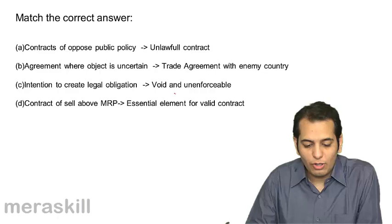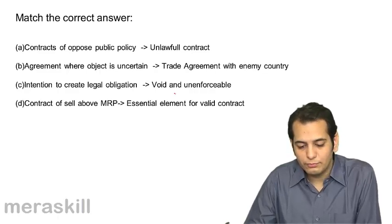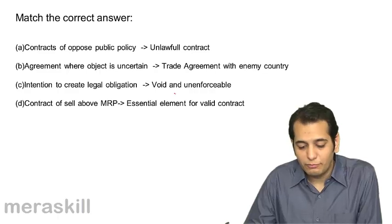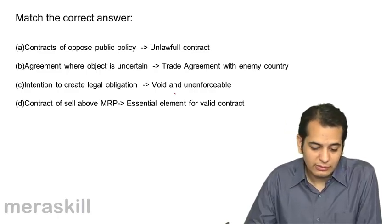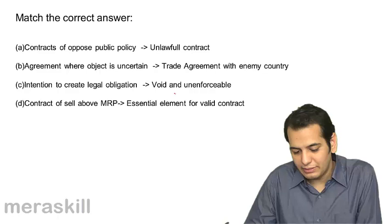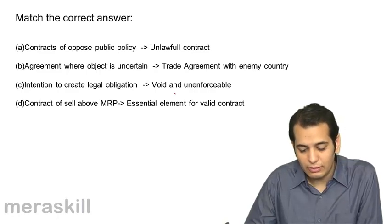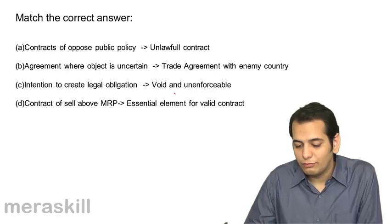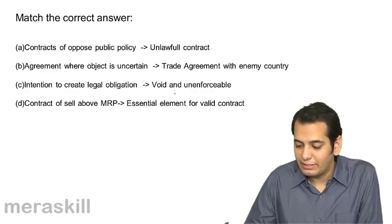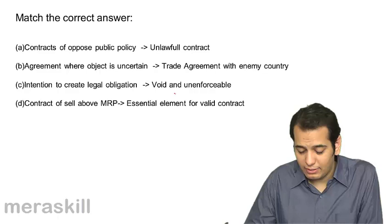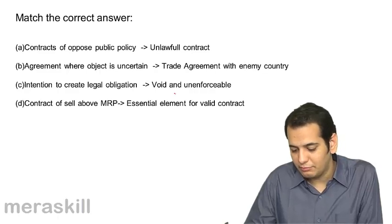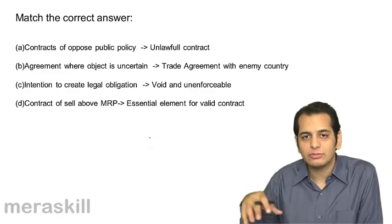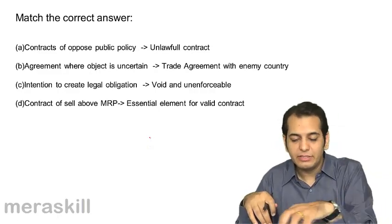A. Contract opposed to public policy. B. Agreement where object is uncertain. C. Intention to create legal obligation. D. Contract to sell above MRP. The options given are: unlawful contract, trade agreement with enemy country, void and unenforceable, essential element for valid contract. You have to match A, B, C, D with the correct answers.